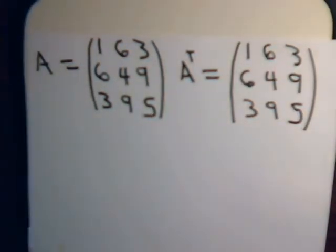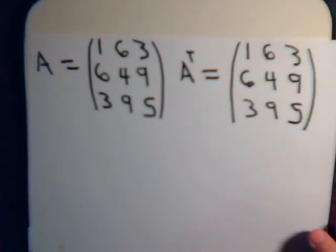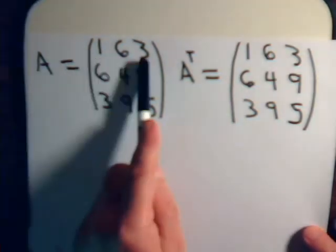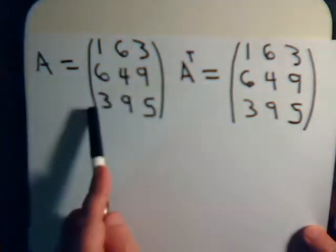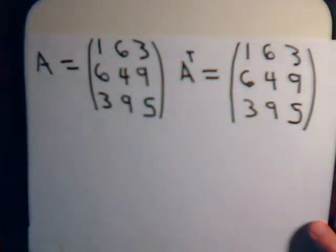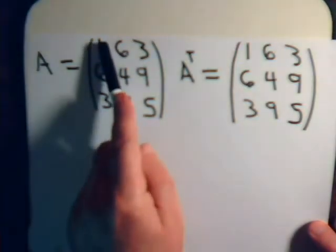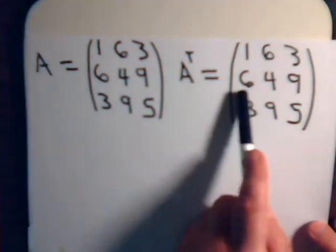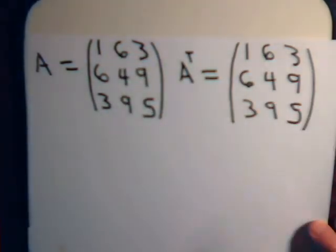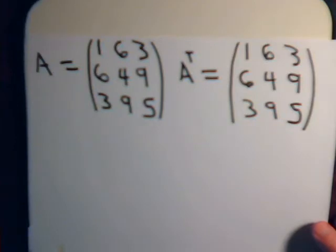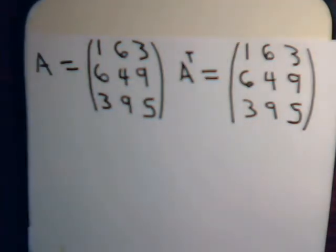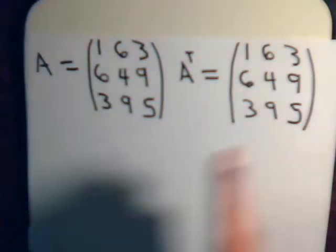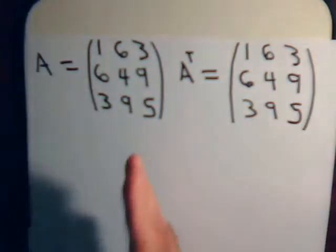Here we have a matrix A with rows 163, 649, 395, and we want to take the transpose of it. So this column is now a row, this column is a row, and this column is a row. When we do that transposition, we see we have the exact same matrix. Matrices that have that property — when you take their transpose and get the same matrix — are called symmetric matrices.